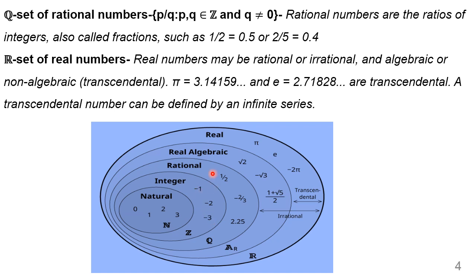Then comes rational numbers. Rational numbers can contain the natural numbers, integer numbers, and also fractional values such as 1/2, 2.25, and −2.3, denoted by the symbol Q. Now comes the real algebraic numbers. These real algebraic and non-algebraic numbers, together with the rational and integer numbers, make up the real numbers.